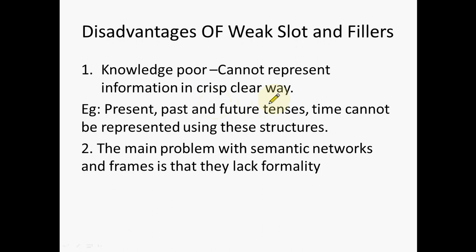For instance, if you consider semantic nets — can you represent present tense, past tense, or future tenses? No. Even frames, which is just a structural representation of the same semantic net in graphical form, also cannot represent such tense information. This is why it is called knowledge poor. The main problem with semantic net and frames is that they lack formality — given a sentence, you could end up drawing many different types of semantic nets and yet all could be considered correct. Similarly, different frame systems can be designed for the same sentence, so there is no one crisp, clear way of representation.